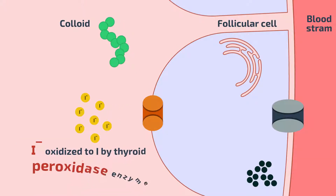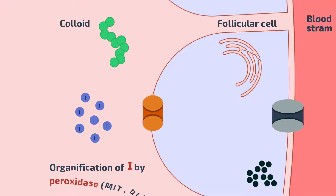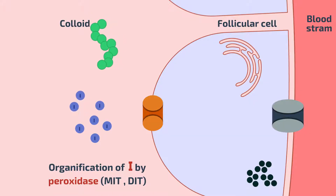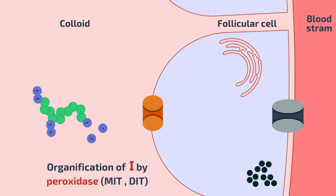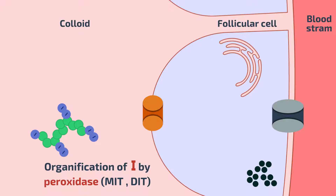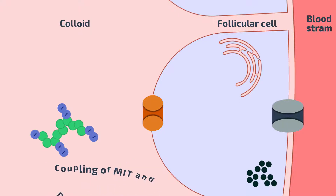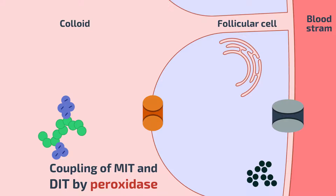Once the iodide is in the lumen, it is converted to iodine by thyroperoxidase. Then iodide is attached to thyroglobulin in a process called organification, forming MIT and DIT, which stands for monoiodotyrosine and diiodotyrosine. MIT and DIT are then attached together in a process called coupling, leading to the formation of T3 and T4, whilst remaining attached to the thyroglobulin.